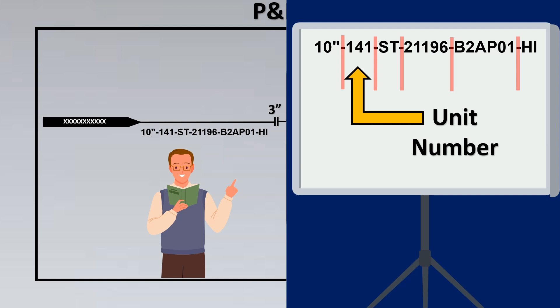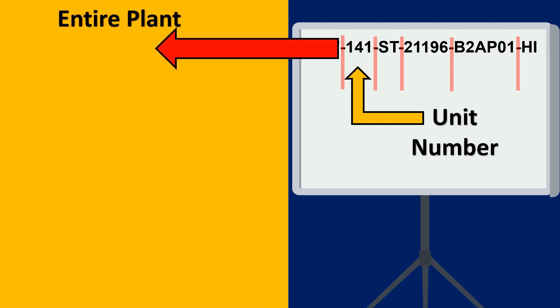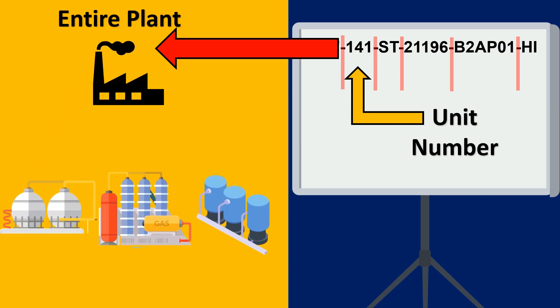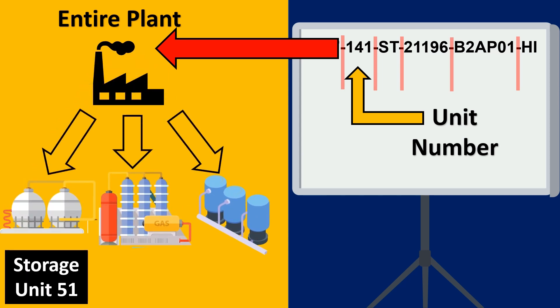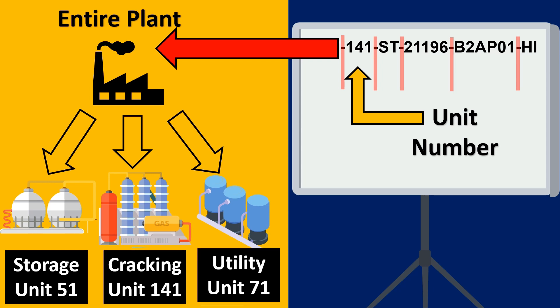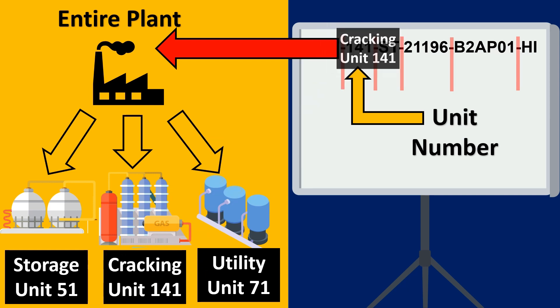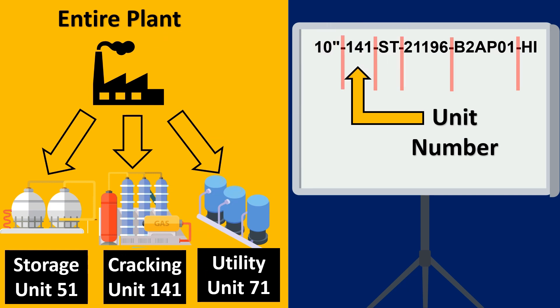Now the next thing is unit number. Now what is meant by unit number? Imagine this is your entire petrochemical complex. Now that complex is divided into various categories. So for example there is something called as a storage unit. There is a cracking unit. Maybe there's a utility unit etc. So this unit is basically put here. So we get to know that this line exists in which unit.